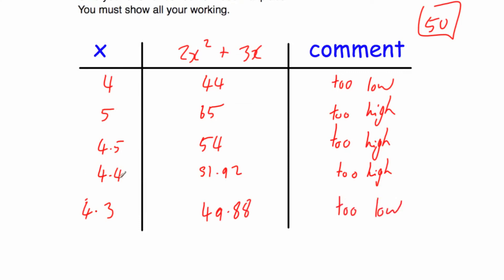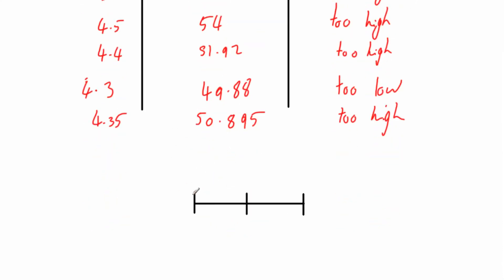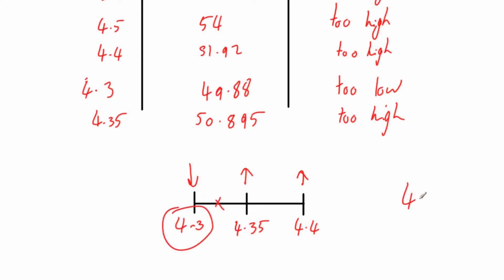So 4.4 is too high and 4.3 is too low. Let's try the checker 4.35: that gives 50.895 — too high. So 4.3 is too low, 4.4 is too high, and the checker 4.35 is also too high. Our answer will be between 4.3 and 4.35, so it's closer to 4.3 than to 4.4. Our answer is 4.3.